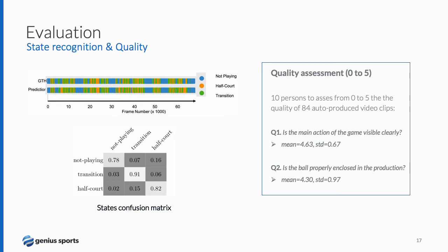We also assess the quality by asking 10 people to rate from 0 to 5 the quality of 84 auto-produced video clips. Question 1: Is the main action of the game visible clearly? Question 2: Is the ball properly enclosed in the production? On average, they rate our auto-production over 4 out of 5.